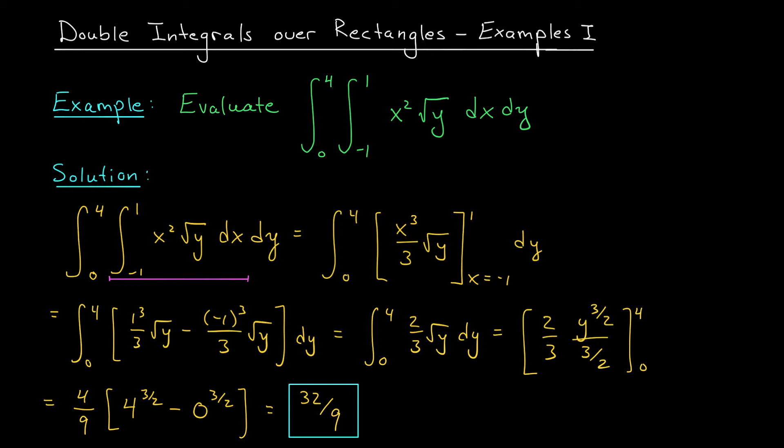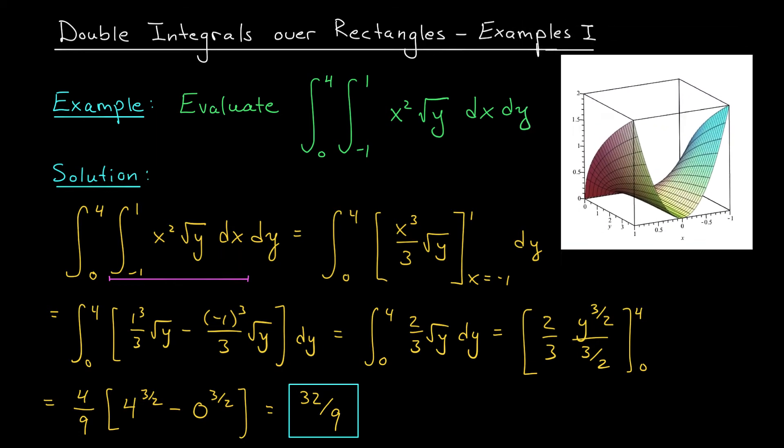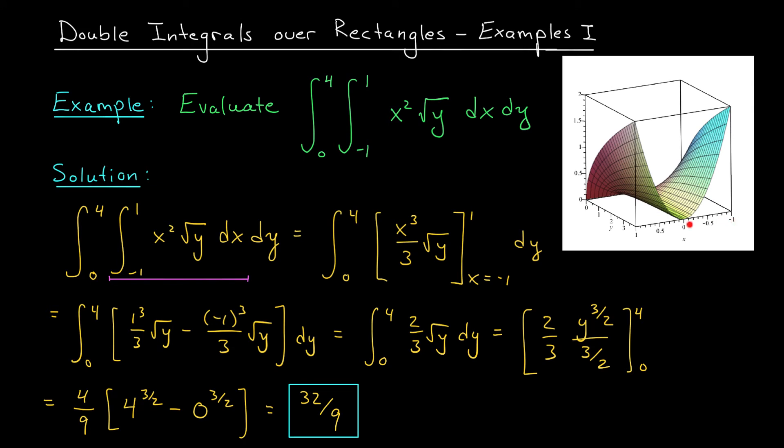It's always helpful to keep the geometric picture in mind as well. Here's the graph of the function x squared root y, for x between minus 1 and 1, and y between 0 and 4. This function is positive, right? It lives above the xy plane, which means this double integral can be interpreted as the volume under our surface and above the xy plane on this particular domain. It's the volume of the solid region shown here.